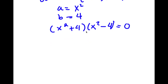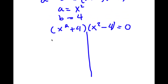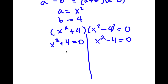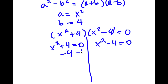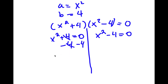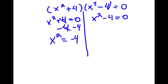Now, this is going to give me two equations. I have x squared plus 4 is equal to 0, and I have x squared minus 4 is equal to 0. For x squared plus 4 equals 0, I can subtract 4 on both sides, and I have x squared is equal to negative 4. For x squared minus 4 equals 0, I can add 4 on both sides, and I get x squared is equal to positive 4.